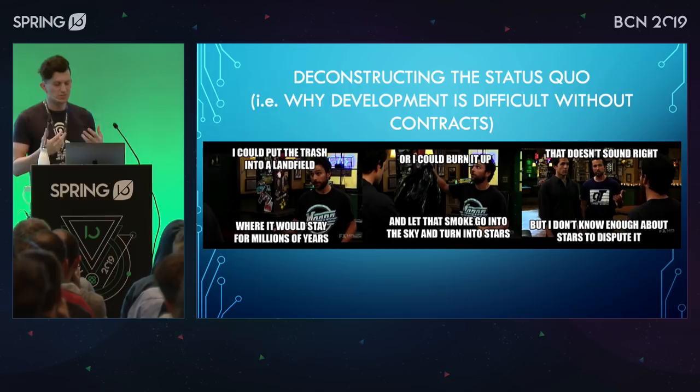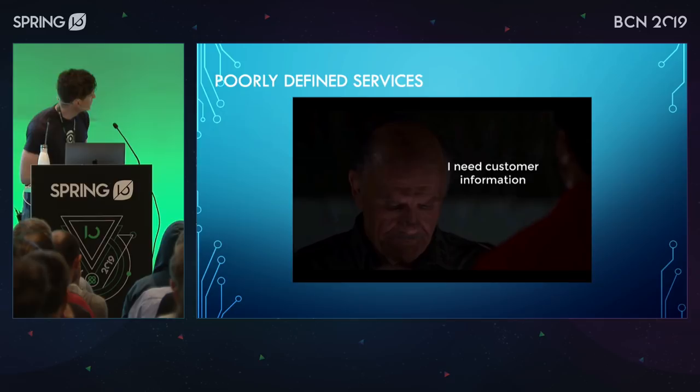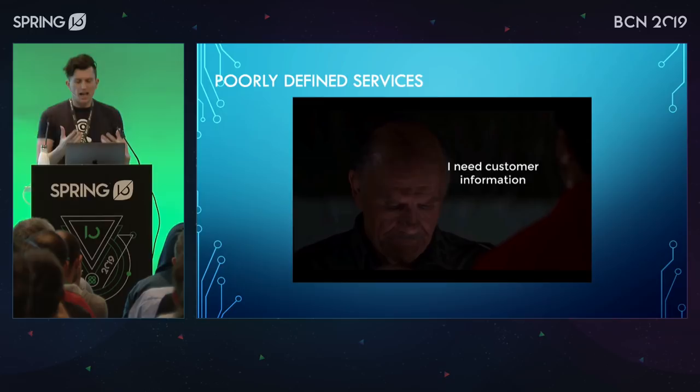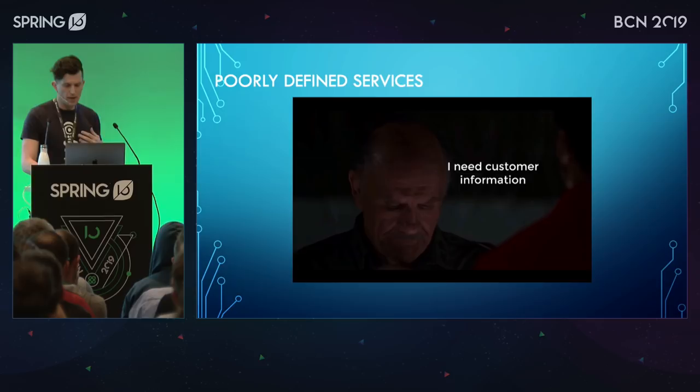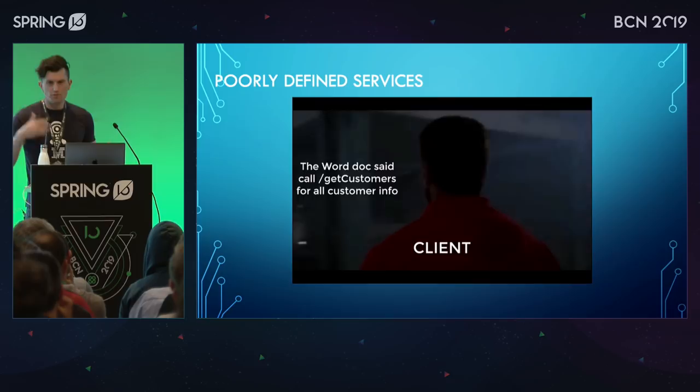The first scenario involves trying to communicate with an already existing service that maybe doesn't have the best documentation. We have a client that needs to connect to a customer service to get customer information. They read a Word doc, and it says 'call get customers.' They do that with an HTTP GET, but it's actually a POST endpoint. They call with GET and get nothing back — a 405 error. They should have been using a POST.